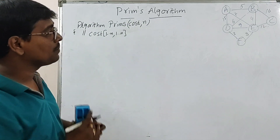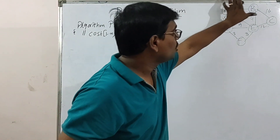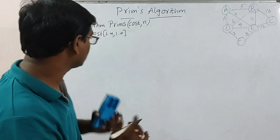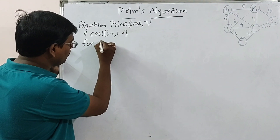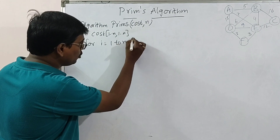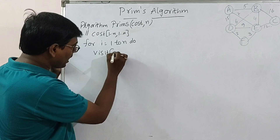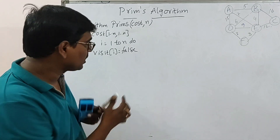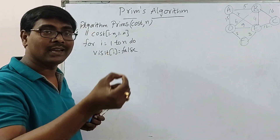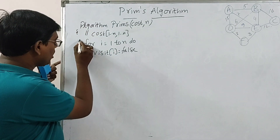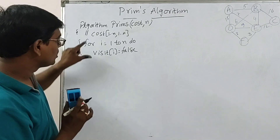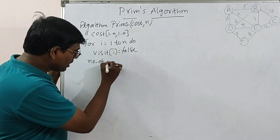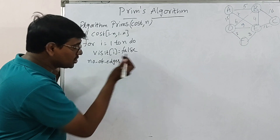The first step is: initially, no vertex is visited. For i = 1 to N, set visit[i] = false. Visit is a one-dimensional array — a vector used to store whether a vertex is visited or not. Initially all vertices are unvisited. I am also using a variable 'number of edges', initially 0.